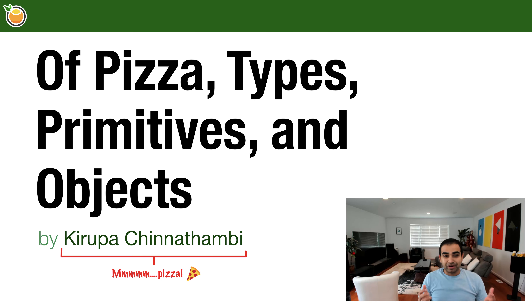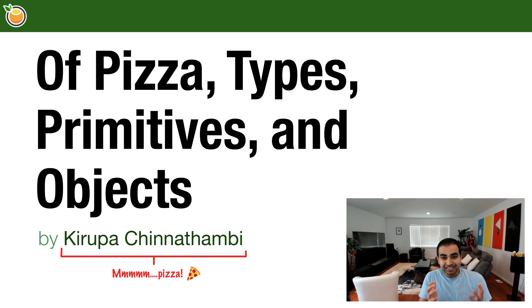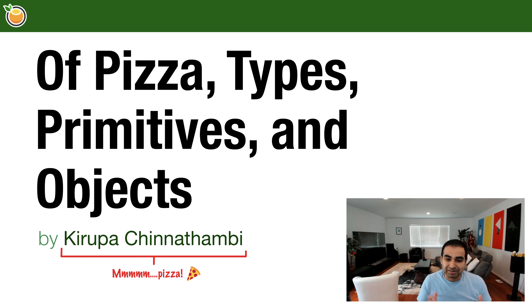In the past few videos, we've been working with all kinds of values. We worked with strings, basically a fancy way of saying text, numbers, booleans, true and false values, functions, and various other built-in things that are part of the JavaScript language. Built-in things is not the proper formal way to describe the variety of values you can use in JavaScript. There's a more formal name for them, and that name is types.